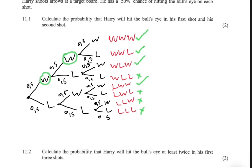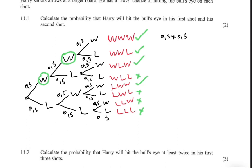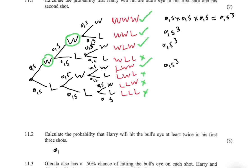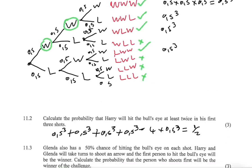Win-win-win is 0.5 × 0.5 × 0.5, which is 0.5 to the power of 3. Win-win-loss is also 0.5 to the power of 3 — because the probability of a win and a loss are both equal to 0.5. Similarly, win-loss-win and loss-win-win are also each 0.5³. So we add these four terms: 0.5³ + 0.5³ + 0.5³ + 0.5³, which equals 4 × 0.5³, giving us 0.5.